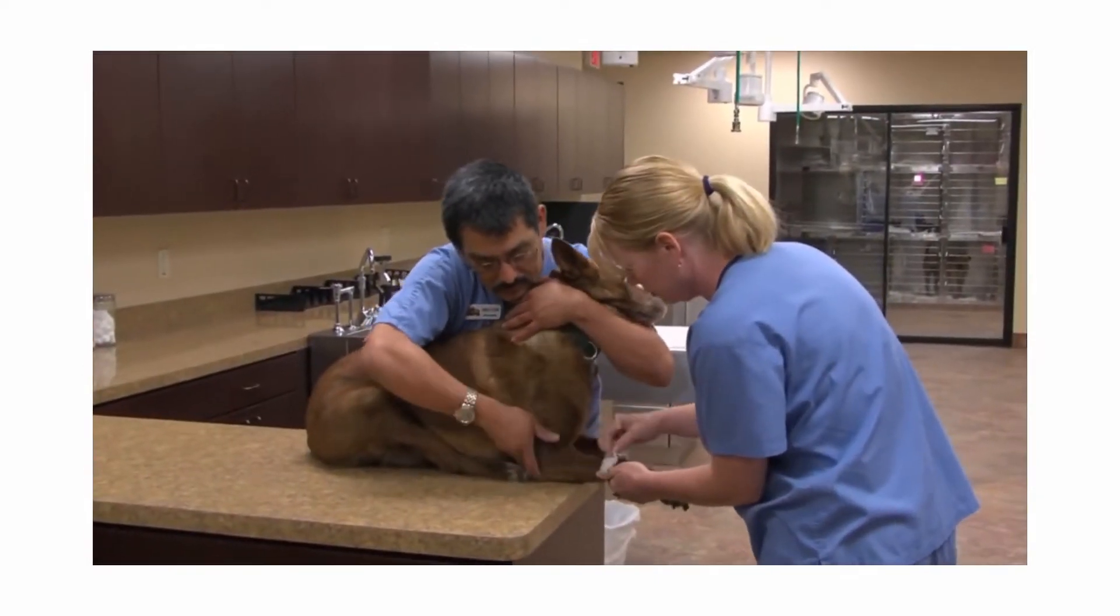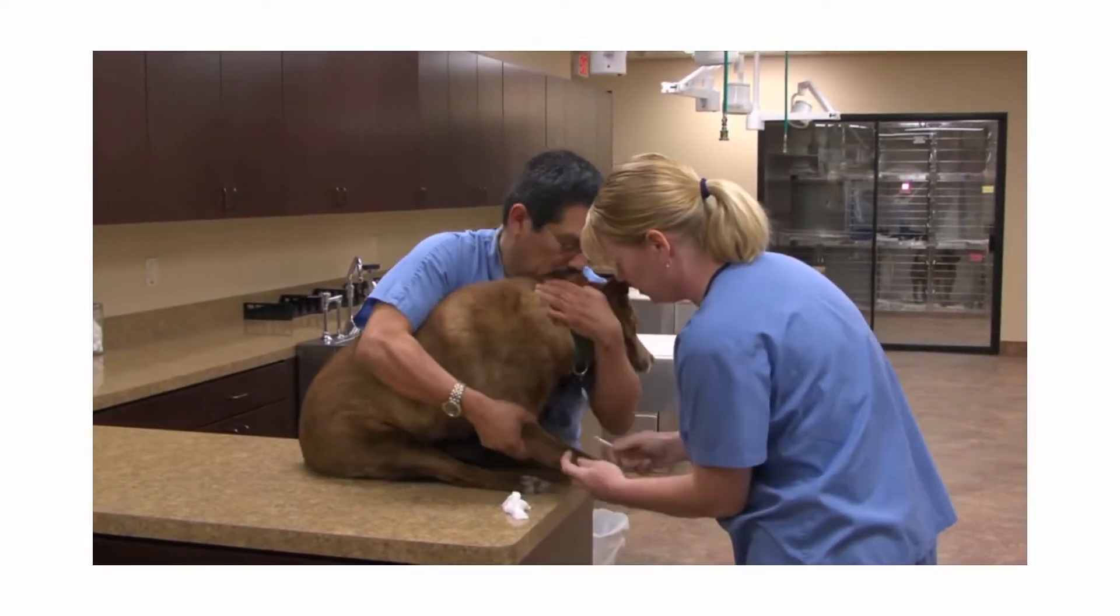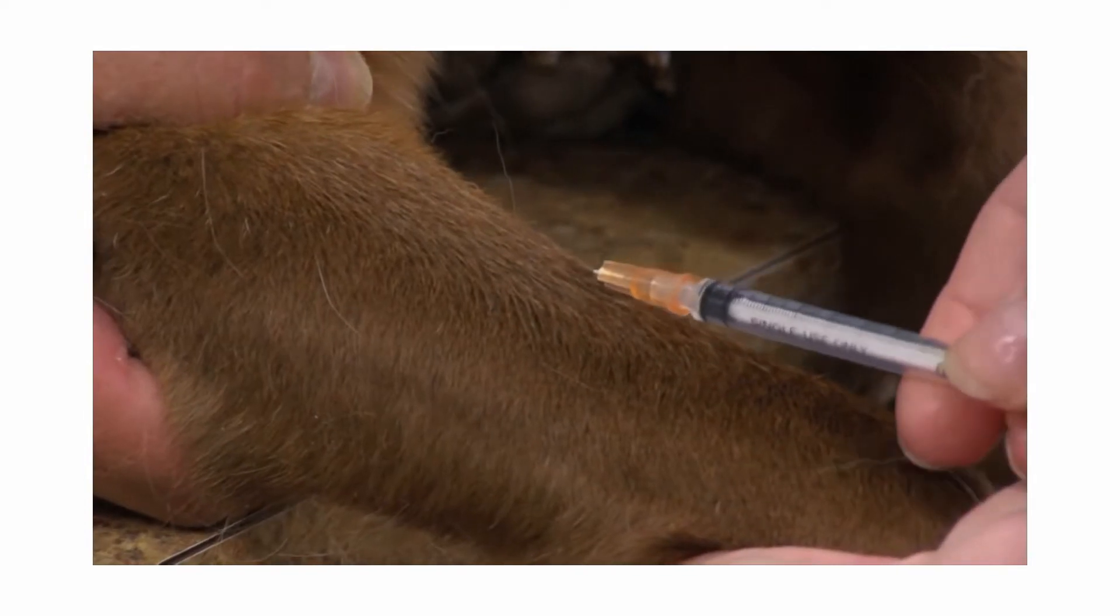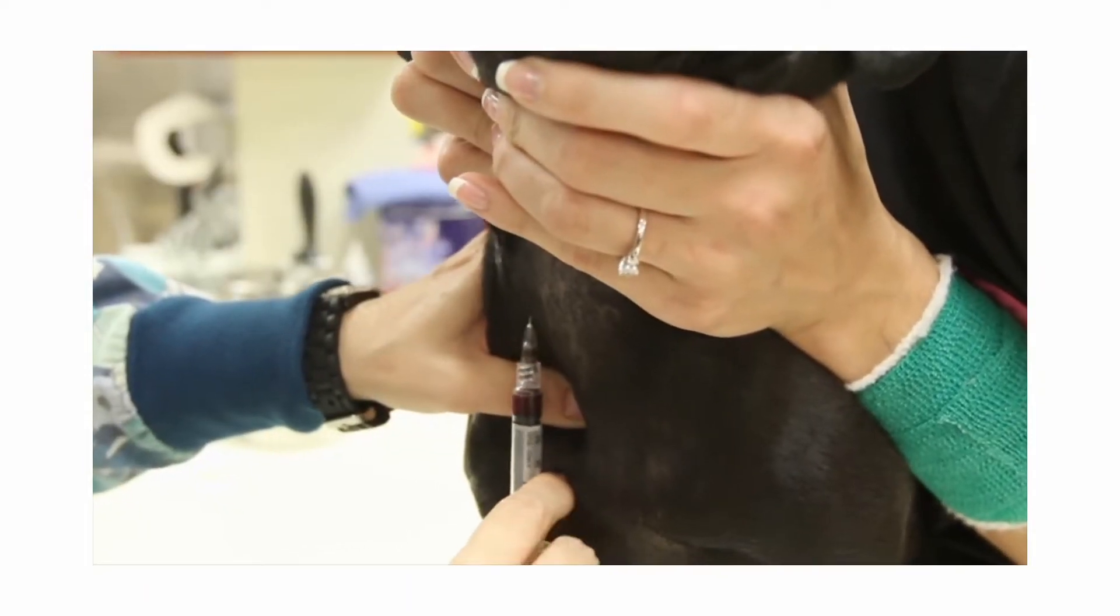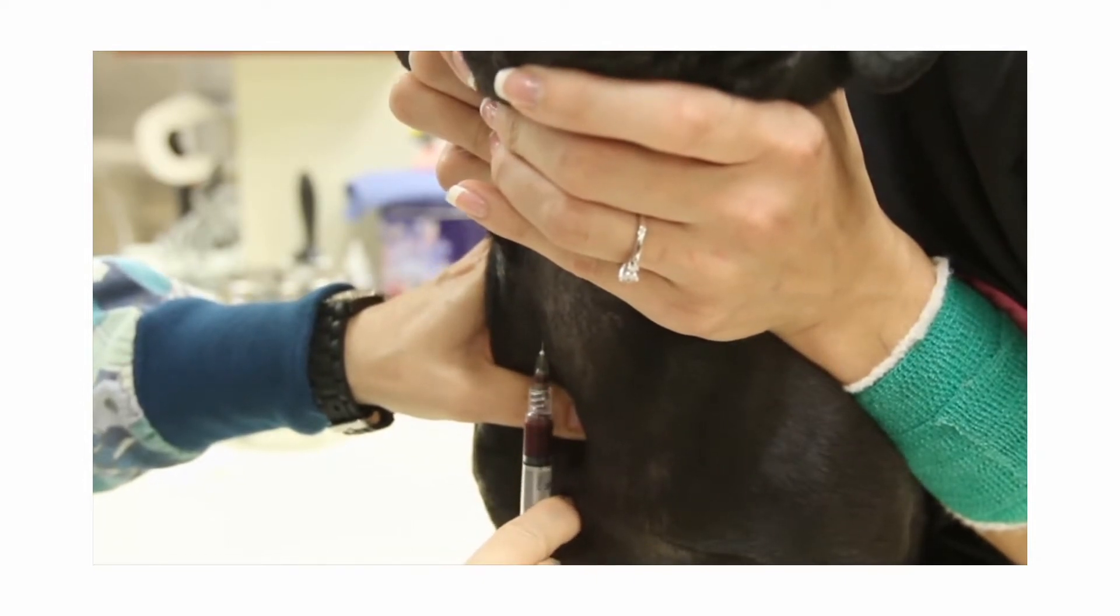In most dogs and cats, blood is collected from one of several veins. The cephalic vein on the leg is used when small amounts are needed, and the jugular vein on the neck is commonly used when larger samples are needed.